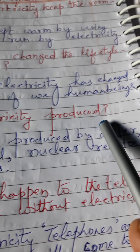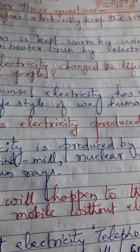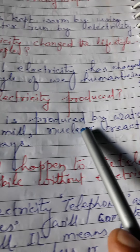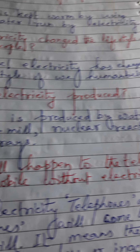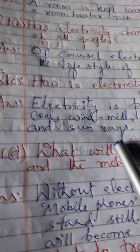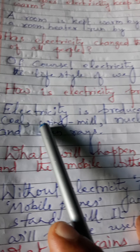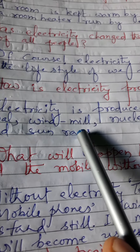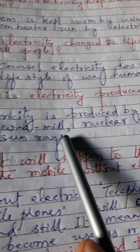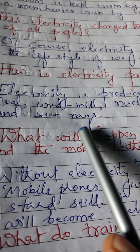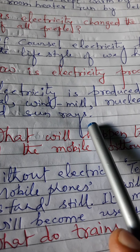Question 1c: How is electricity produced? Electricity ko kaise utpan kiya jata hai? Answer: Electricity is produced by water, coal, windmill, nuclear reactor, and sun rays. Electricity ki utpadan jal ke dwara, koyle ke dwara, windmill ke dwara, nuclear reactor ke dwara, tatha surya ki kirno ke dwara kiya jata hai.